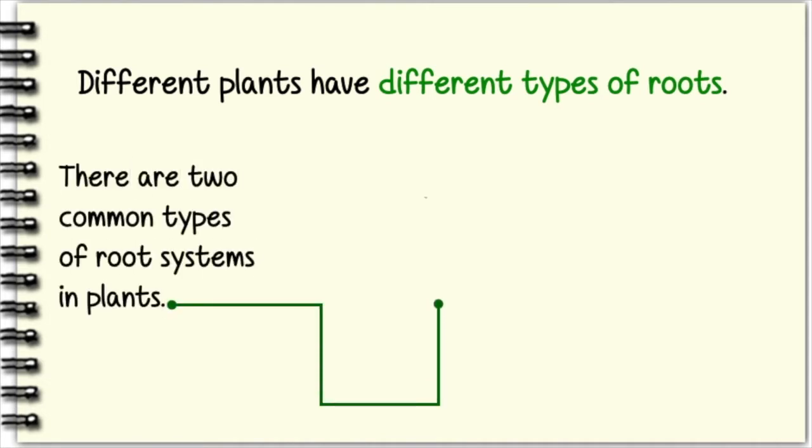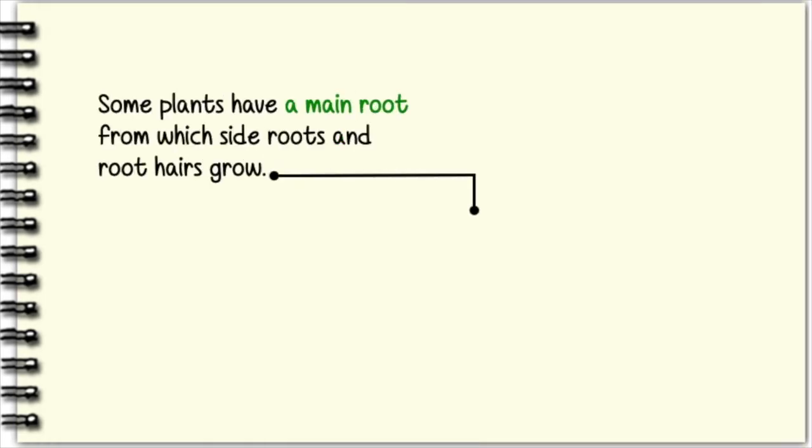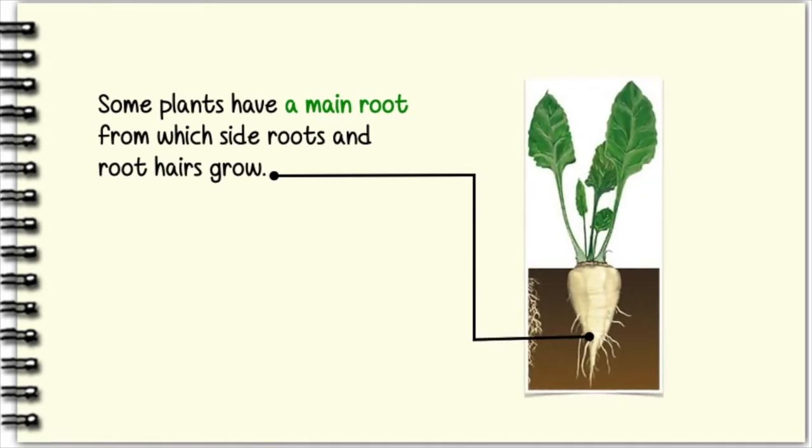There are two common types of root systems in plants. Some plants have a main root from which side roots and root hairs grow. This is called a tap root system.